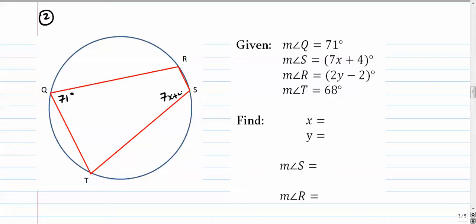Angle R is 2y minus 2, and angle T is 68. So we have four things to find. We need to find x, y, angle S, and angle R.